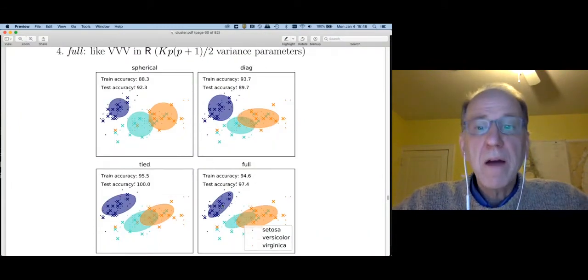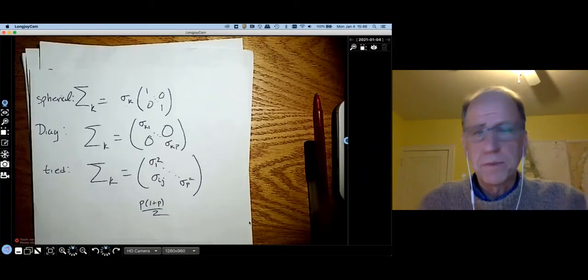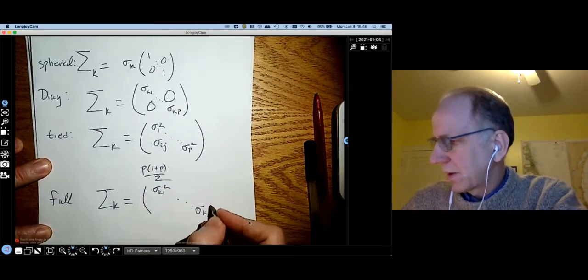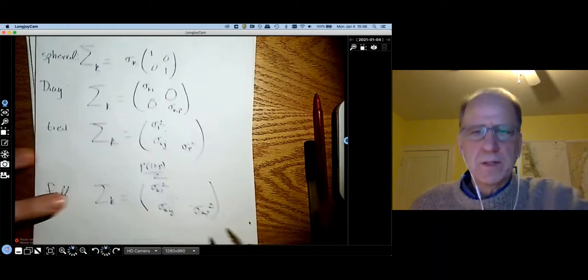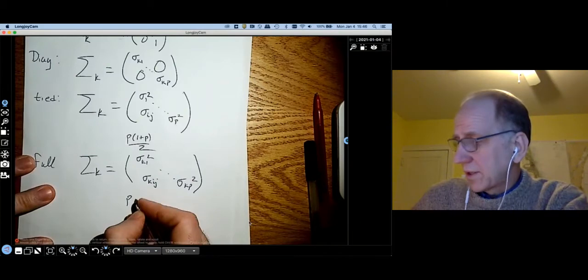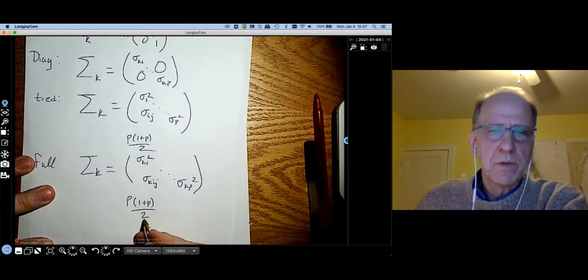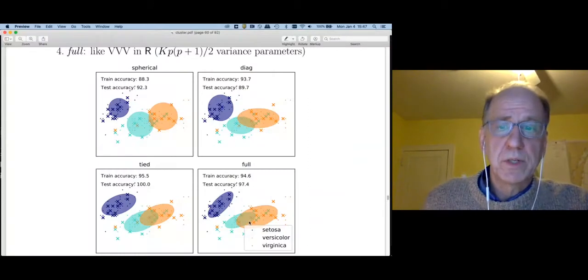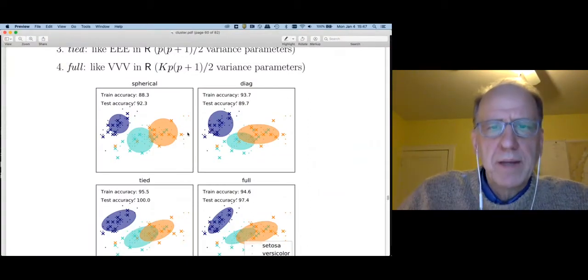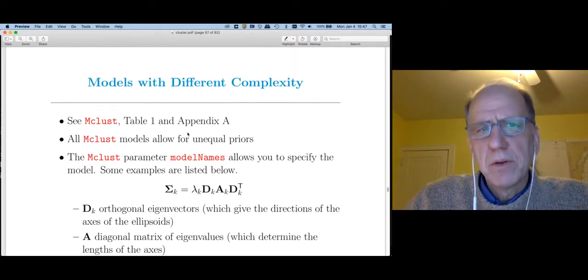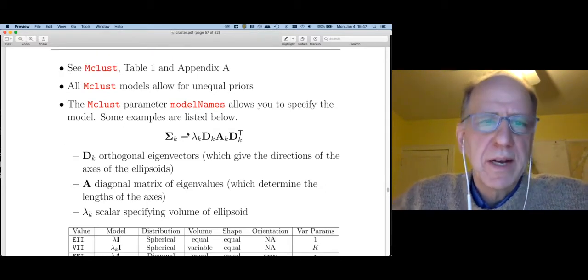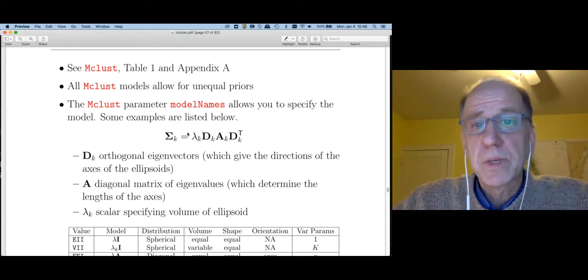Full is where we allow every cluster to have its own correlation matrix. So sigma sub k is going to be sigma k1 squared through sigma kp squared, sigma kij as the off diagonal element. Notice one cluster has p times 1 plus p over 2 terms, but I have k of those, so that's going to be the total number of variance parameters that I have to estimate. So you can tell Python which set of covariances you want. Let's now look at how mclust handles this.